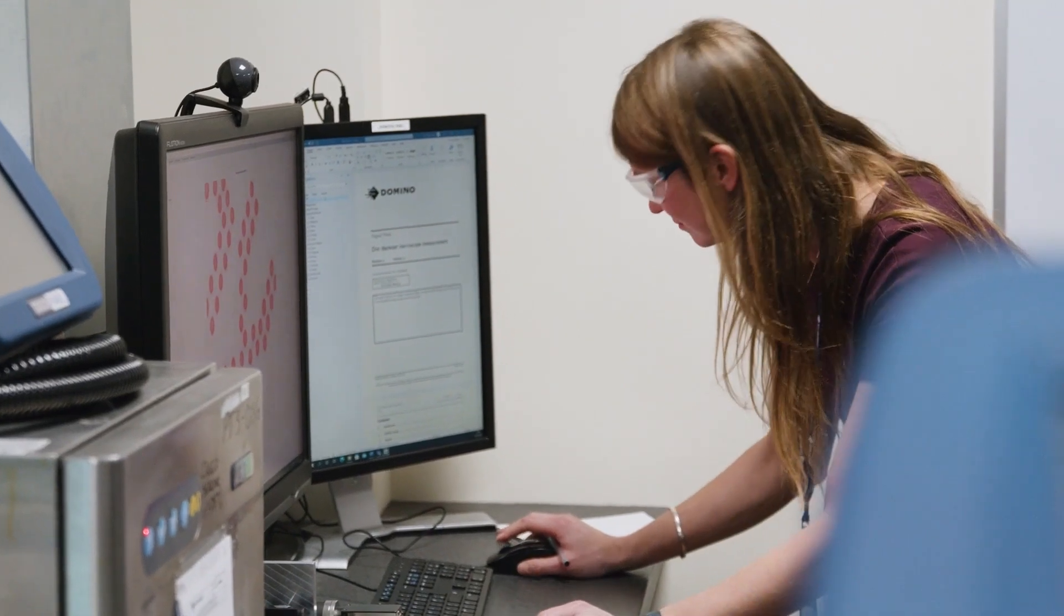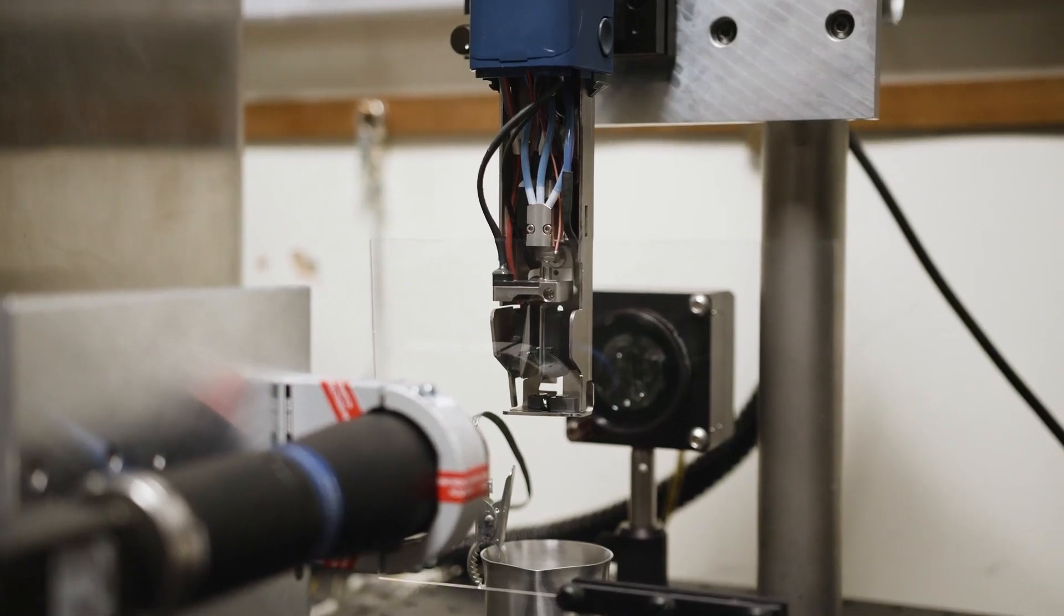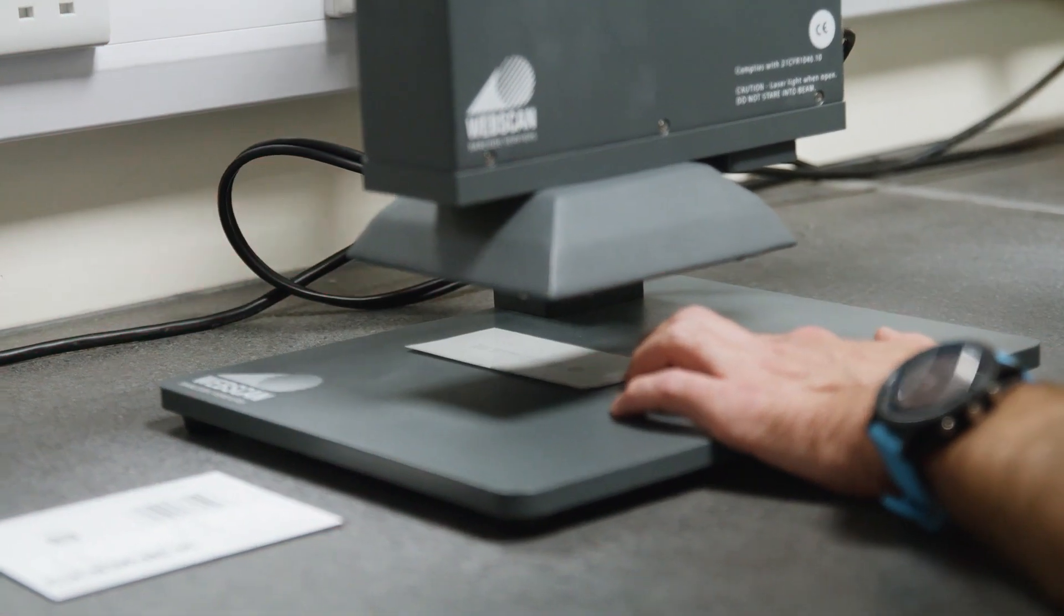Some of the most important measurements we do are to assess our print quality, which we do using a raster rig. This optimizes drop placement to give accurate print, including 2D barcodes.